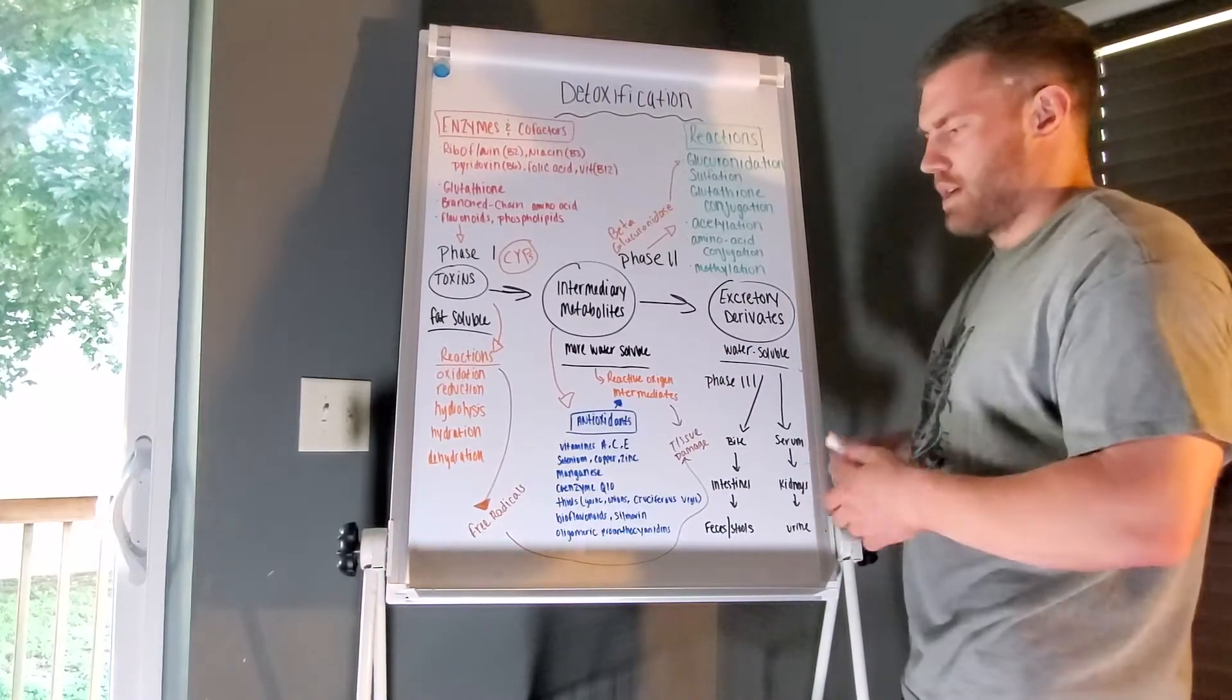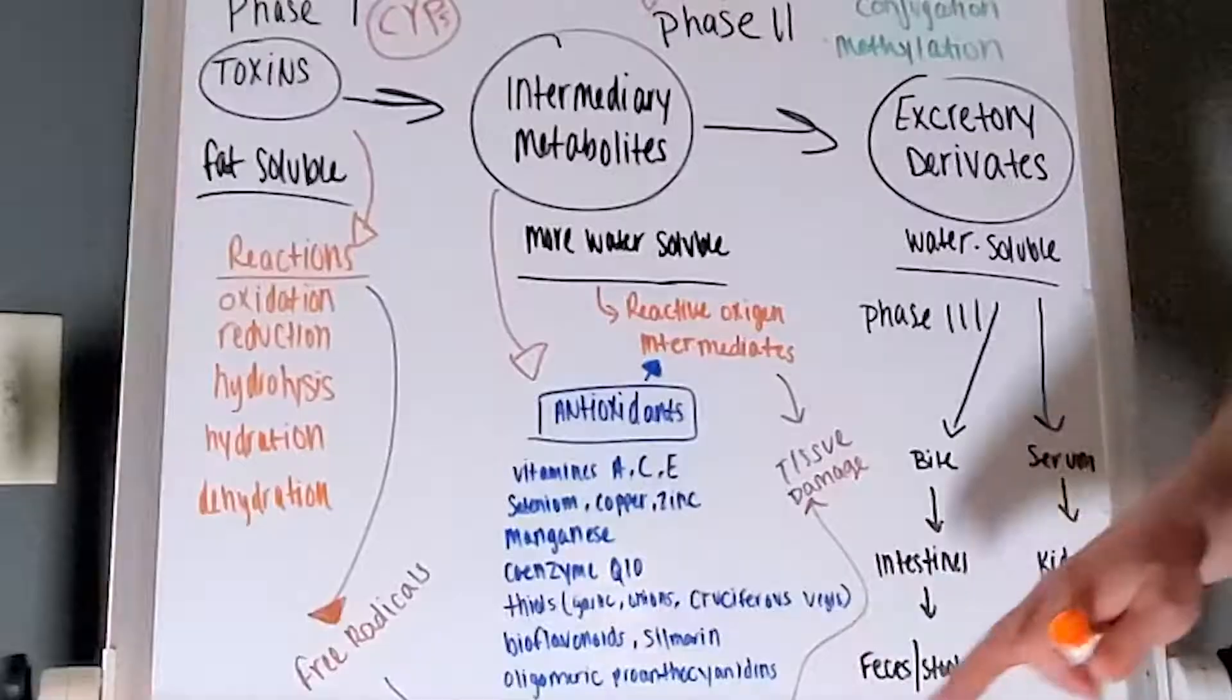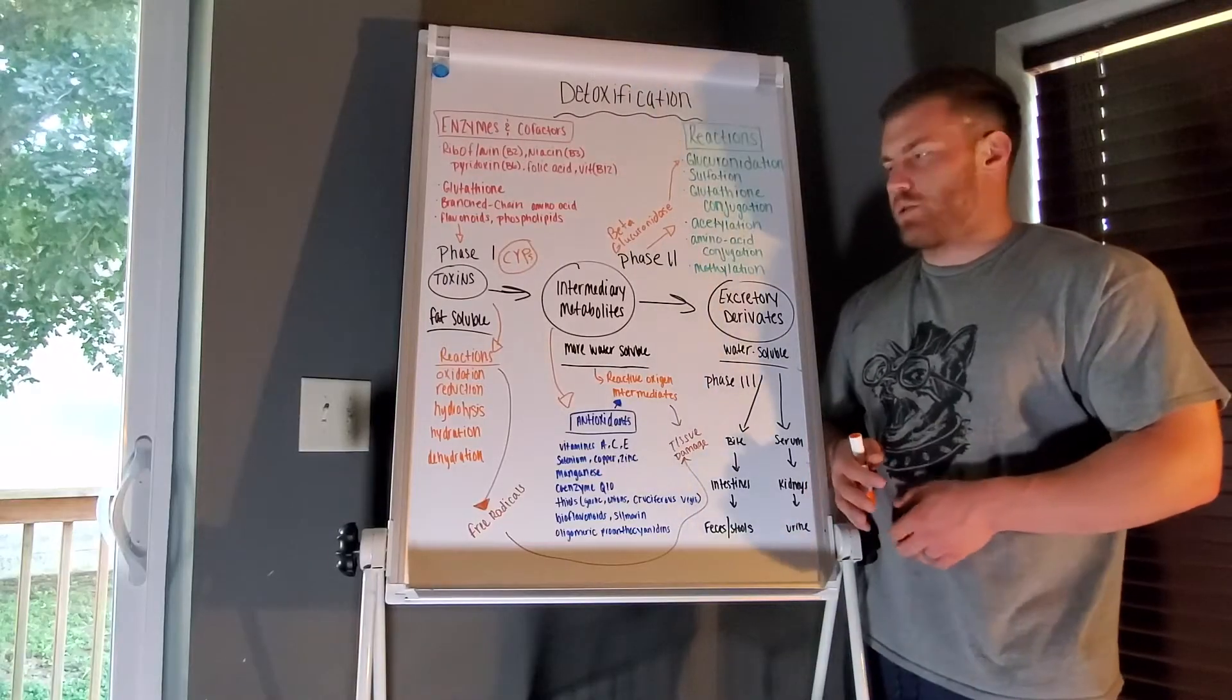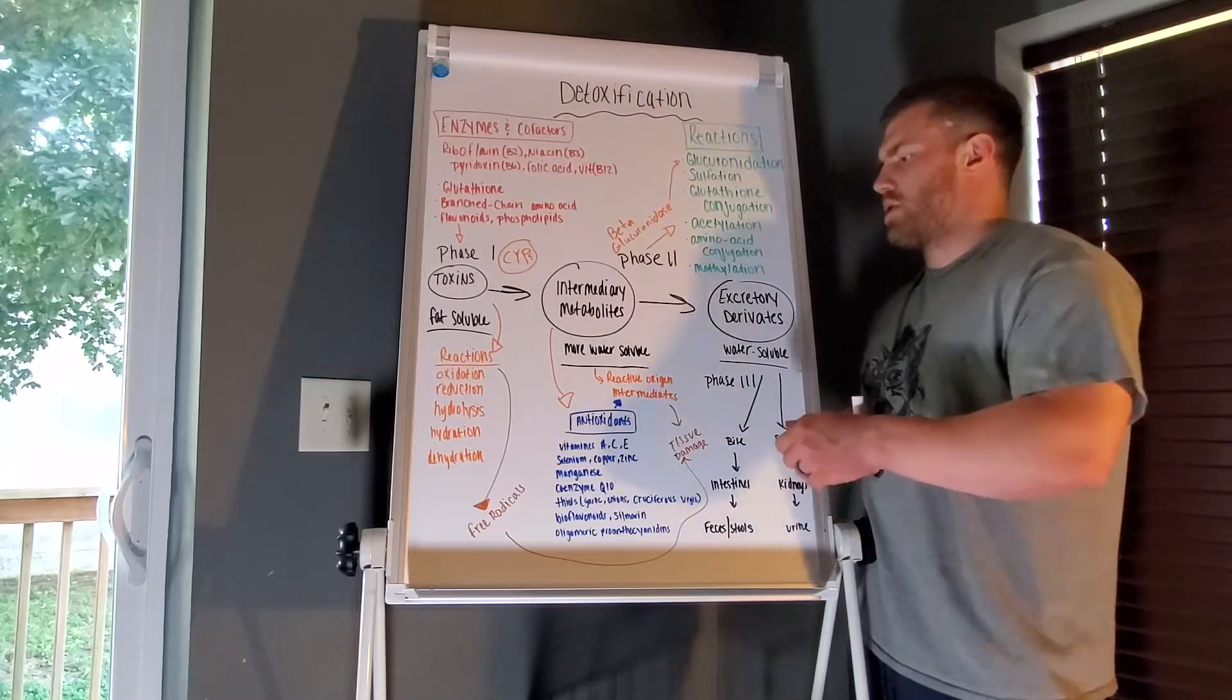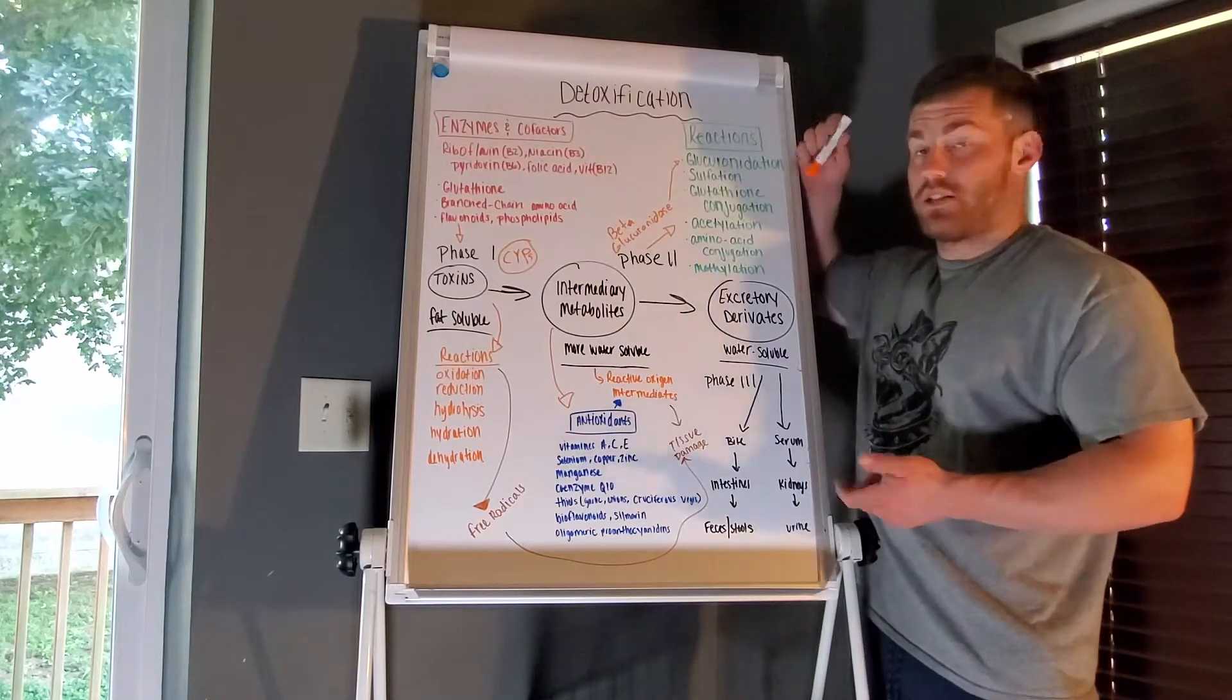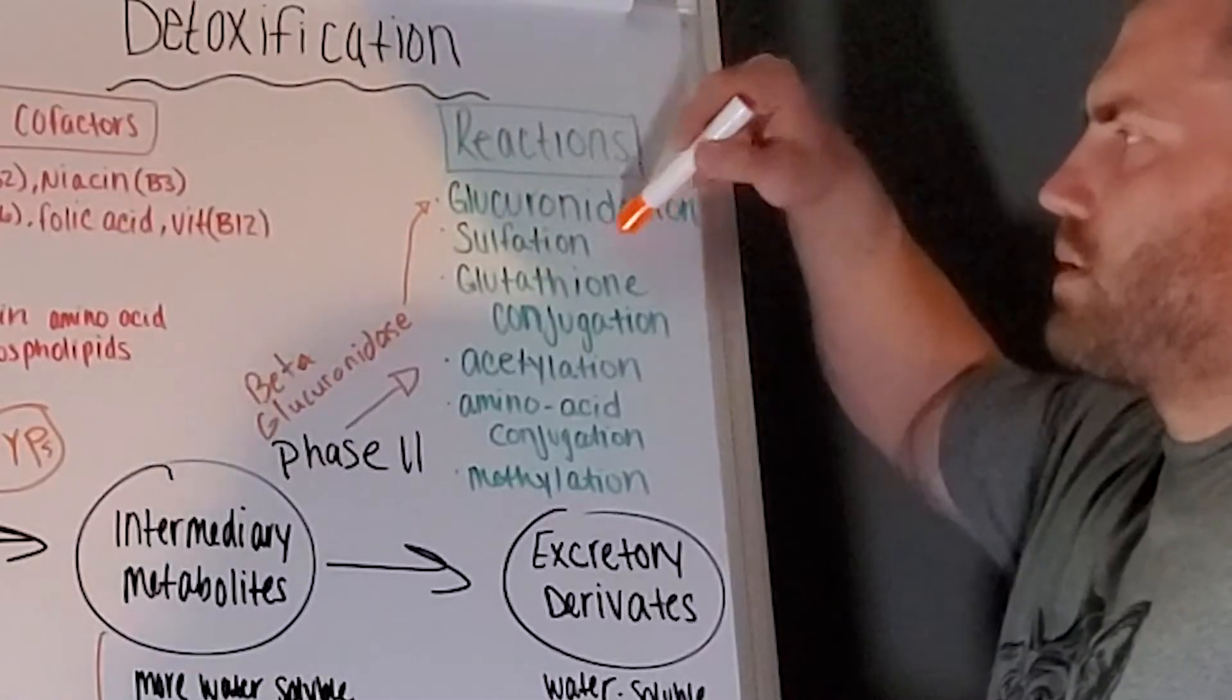You guys can see all this here. Again, in this phase, we're trying to prevent tissue damage, we're dealing with free radicals. Now we have processes going on in this phase, or reactions I should say: glucuronidation, sulfation, glutathione conjugation, acetylation, amino acid conjugation, and methylation.